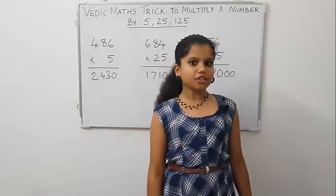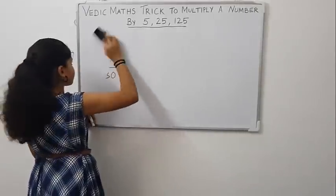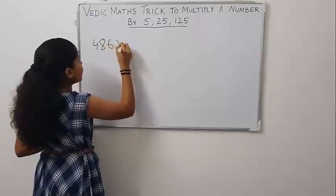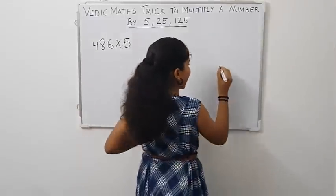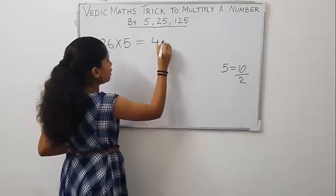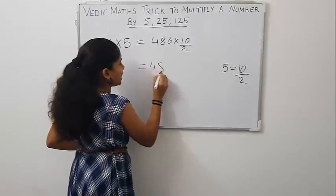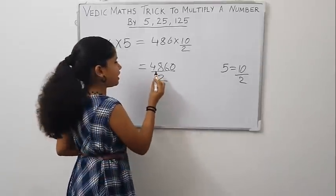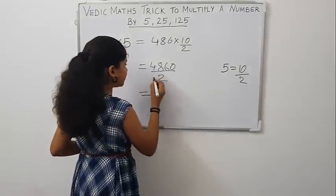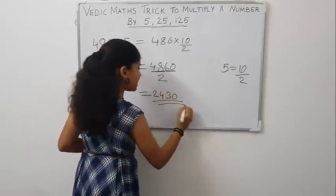Now I will explain how to multiply a number by 5. First, let us take 486 into 5. Friends, we know that 5 equals to 10 by 2. So, write the question like this: 486 into 10 by 2, 4860 by 2. Now, we need to divide 4860 by 2 or we can take half of 4860, that is 48 half is 24 and half of 60 is 30. This is our answer.